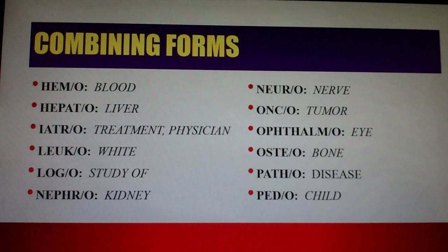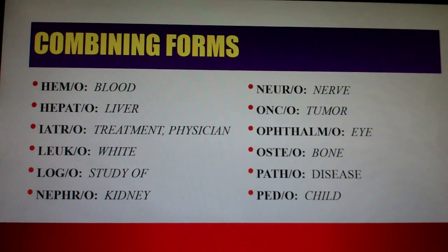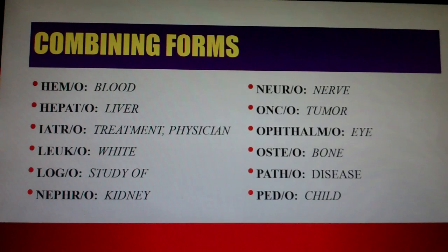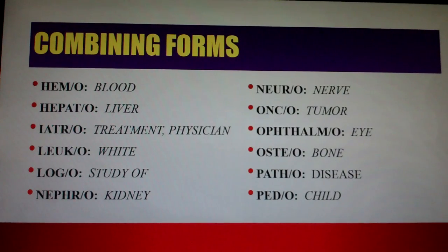Iatero means treatment or physician. Leuko means white. Logo means study. Nephro means kidney. Neuro means nerve. Onco means tumor. Ophthalmo means eye — that one is always difficult to pronounce. Osteo means bone. Patho means disease.